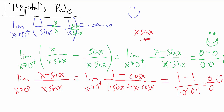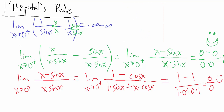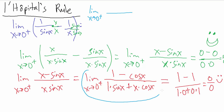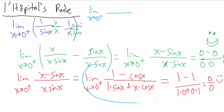We didn't get a numeric answer yet, but this tells us to go ahead and try L'Hôpital's rule again. So let's apply L'Hôpital's rule to the limit as x goes to zero from the right of one minus cosine x on top, and sine of x plus x cosine of x on the bottom. Since we evaluated this by direct substitution and got zero over zero, we can use L'Hôpital's rule on this.